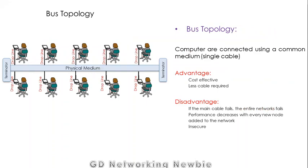Next is bus topology. In bus topology, all the computers which are part of the network are connected using a common medium. All of the nodes are connected with that common medium with the help of a drop line, which is a cable used to connect to the physical medium. We also use a terminator at the end of the cable.